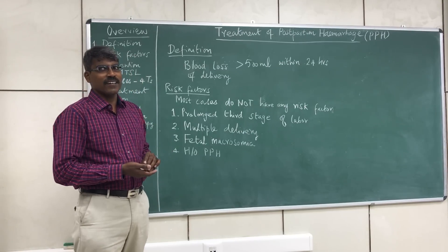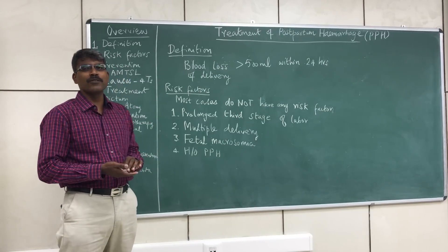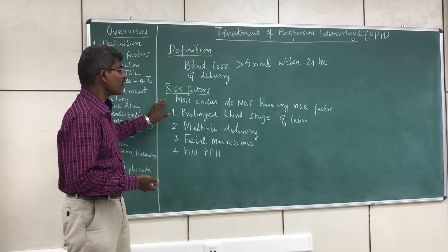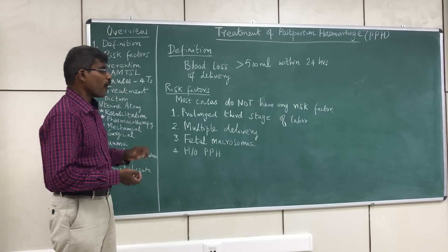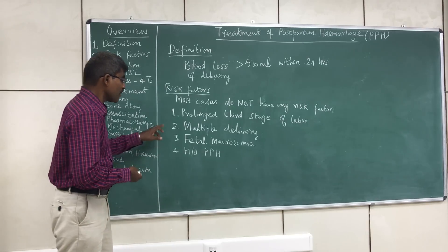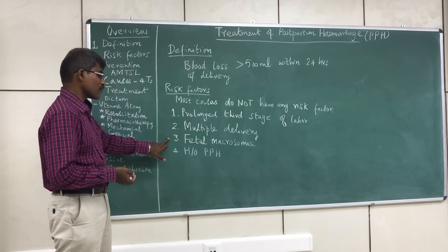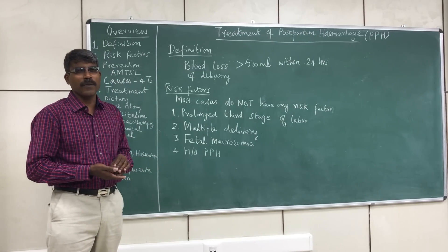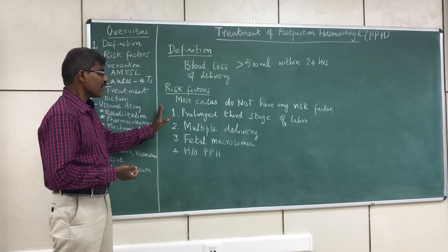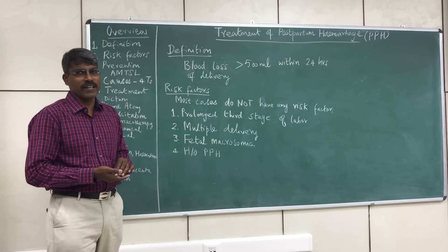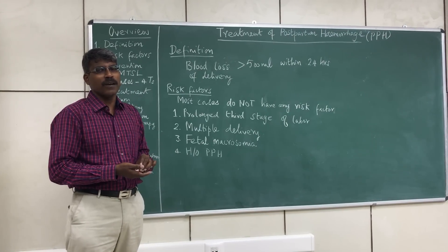Now let us see what are the risk factors for postpartum hemorrhage. Most cases of postpartum hemorrhage do not have any underlying risk factors. However, 3 or 4 factors are considered risk factors: prolonged third stage of labour, multiple delivery, fetal macrosomia, prolonged distension of uterus leading to atony, and previous history of postpartum hemorrhage. Patients with these risk factors are advised to deliver in centers equipped with resuscitation and blood transfusion facilities.